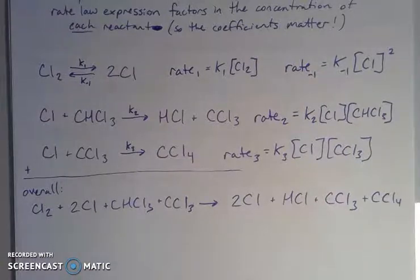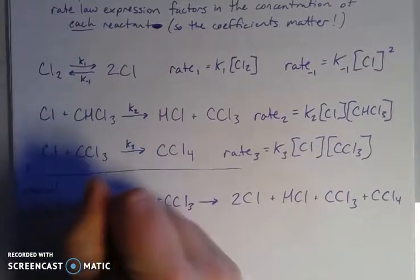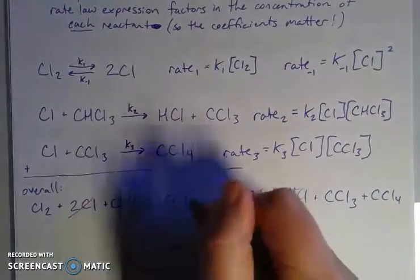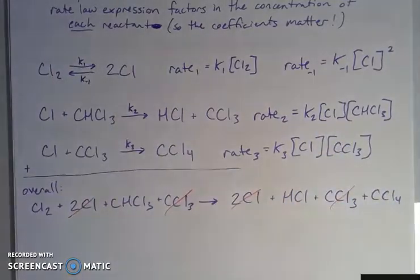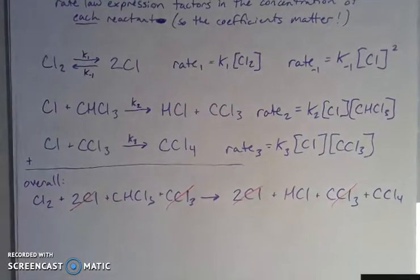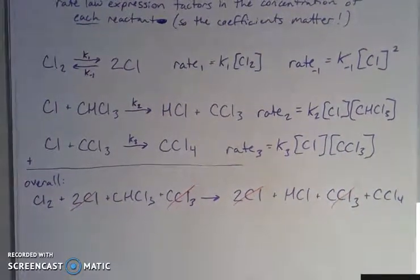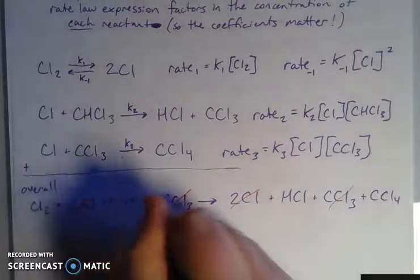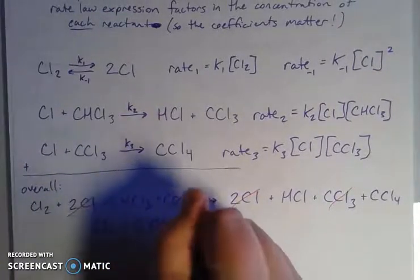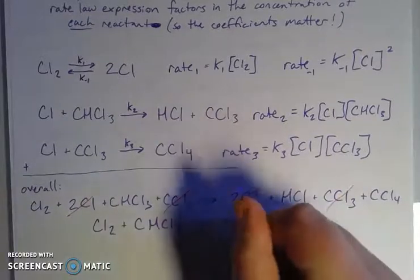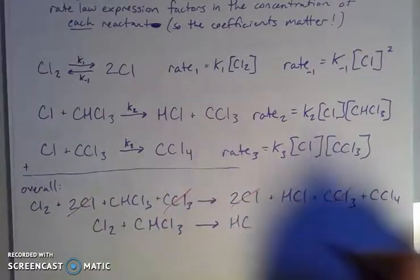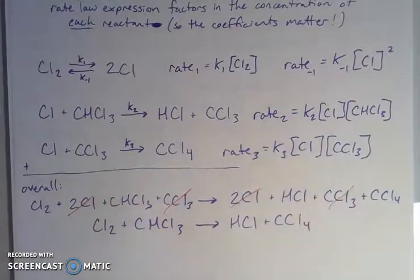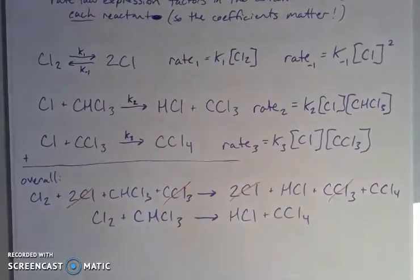To identify my intermediates: I have two chlorines here and two here, and I have CCl₃ on each side. So my overall reaction is going to be Cl₂ plus CHCl₃ gives me HCl and CCl₄.